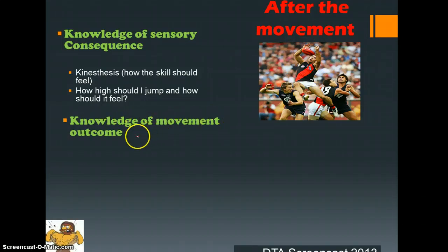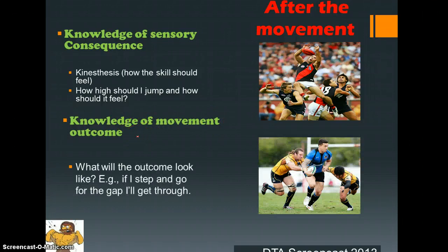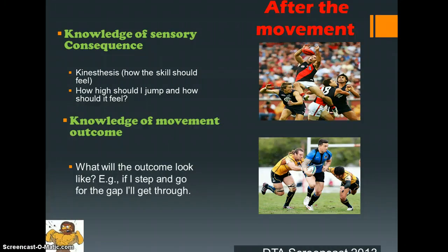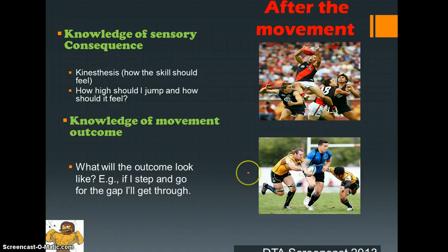We also have knowledge of movement outcome — in other words, what will the outcome look like? Sonny Bill Williams is coming through a gap and has to work out: if I step through the gap will I be able to get through? What will the outcome be if I break through, or if I choose to pass instead? So knowing what the outcome will be, you should be able to identify whether you achieved it or not based on the outcome.